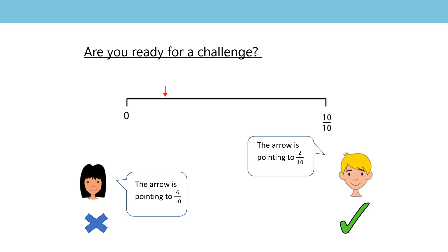It is now time to review our challenge question from last time. What number could the arrow be pointing to? Chen thinks that the number is two tenths but Sara thinks the number is six tenths. Who do you think is correct? Don't forget that Mrs Chambers asked you to explain your answer.